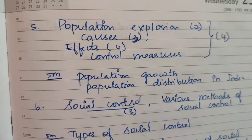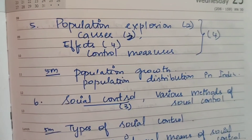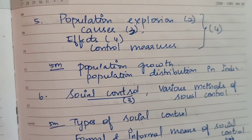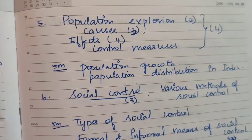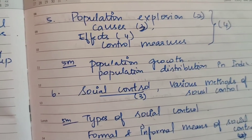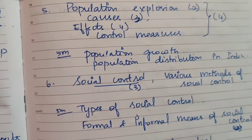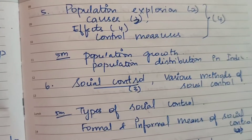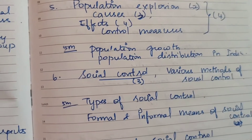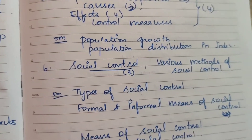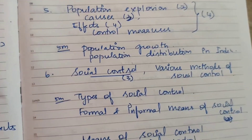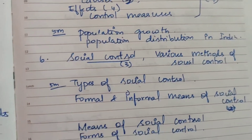Fifth question: Population explosion — the overall topic has appeared 4 times. Population explosion specifically asked 2 times. Causes of population explosion asked 3 to 4 times. Causes and control measures of population explosion for 5 marks. Population growth and population distribution in India are similar related questions.